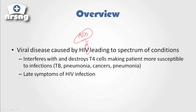What happens is HIV interferes with and destroys T4 cells, making patients more susceptible to infections — infections like TB, pneumonia, and cancers.